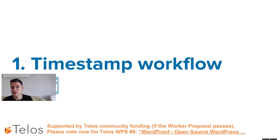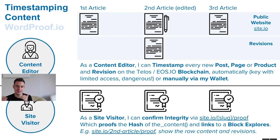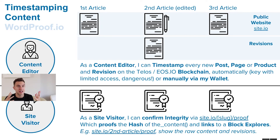Let's have a look at the three basic workflows of the first version of the WordPress plugin. Number one is the timestamping workflow. Every article will be timestamped in the blockchain. When you edit an article, there will be a new timestamp, but the old one is still visible, so you can track the history and integrity of the content on your WordPress website or WooCommerce webshop. The content editor can timestamp every time they publish a post, page, or product on WordPress, and the site visitor can see in the front end a certificate of integrity with a link to an EOSIO block explorer.